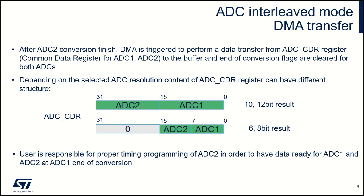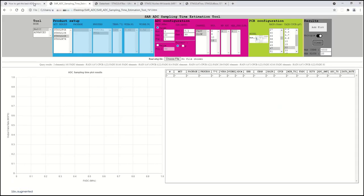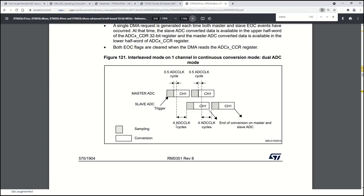For the highest resolution — 12 bits — the CDR data placement is as follows: the higher half-word contains the slave ADC data register, and the lower half-word contains the master ADC data. If 6 or 8 bits are selected, the higher half-word of the CDR is empty, and the lower half-word contains two outputs — the higher byte for the slave ADC and the lower byte for the master ADC. This layout may be a little clearer in the diagram given in the reference manual, showing the DMA transfer trigger.